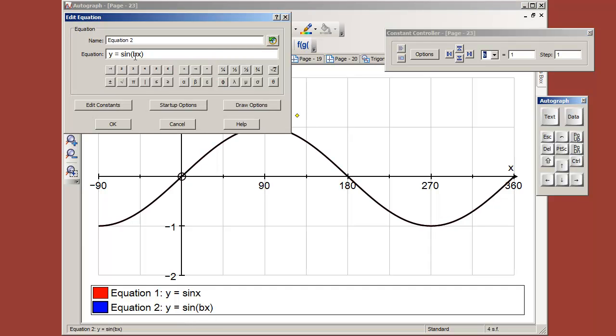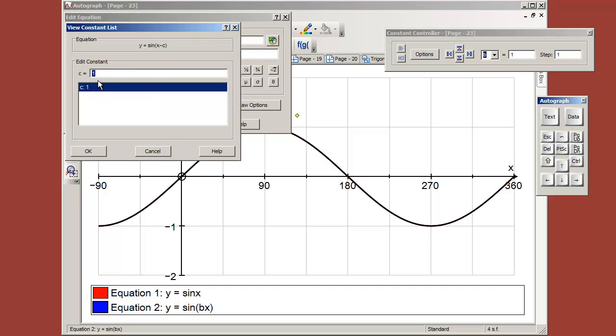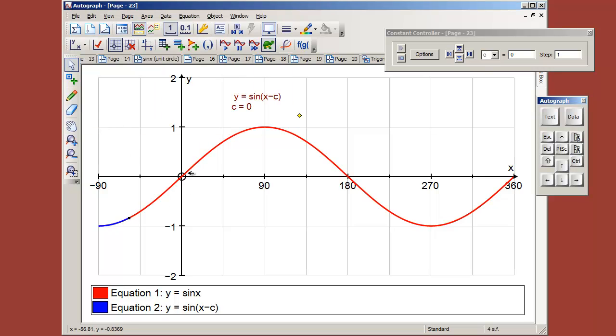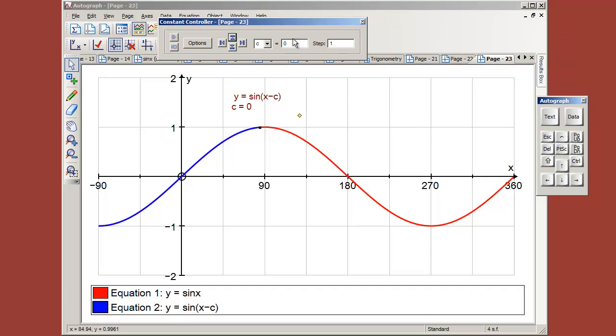The other sort of constant worth thinking about is x minus c. In transforming with lateral translations, I always like to use x minus c, because when x equals c, the origin value moves to the right to the value of c. So if we make the constant 0 to start with, then again it will plot straight on top of it.